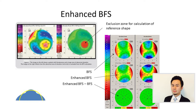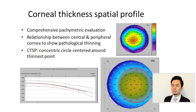The first two indices of the BAD actually measure the elevation profile of the anterior and posterior corneal surfaces. We fit the cornea with a sphere called the best-fit sphere and measure how much the cornea is above and how much is below. The Pentacam also calculates the corneal thickness spatial profile, showing the relationship between central and peripheral cornea to detect any pathological thinning. It fits multiple concentric rings centered at the thinnest point of the cornea and measures the change in corneal thickness along those ranges.